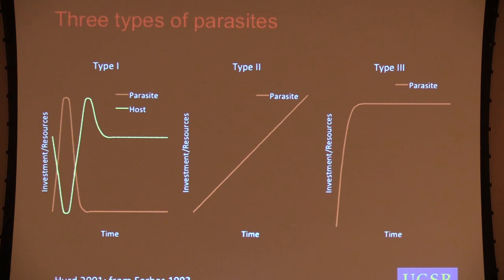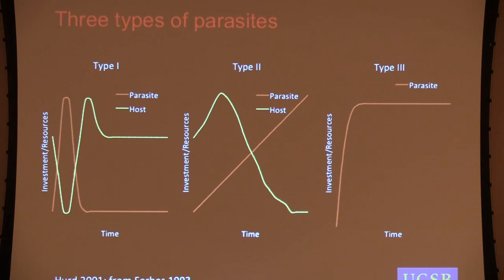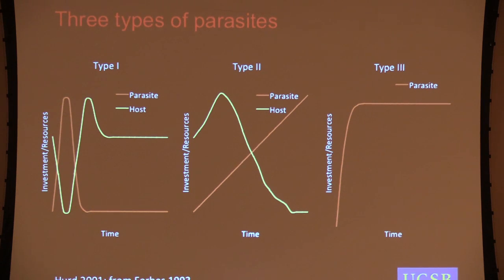We might have a parasite or pathogen where you get infected and there are gradually increasing costs over time, say through your lifespan. If you're infected with something like this, what you might want to do instead is shift your reproduction forward. We call this fecundity compensation — an increase in reproductive rate or a shifting towards earlier ages of reproduction associated with these increasing costs, which can include both direct costs and indirect costs related to things like increased mortality risk later on.